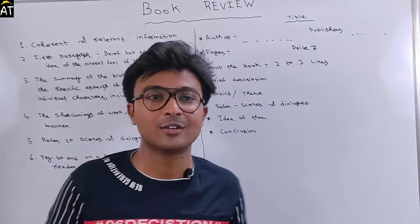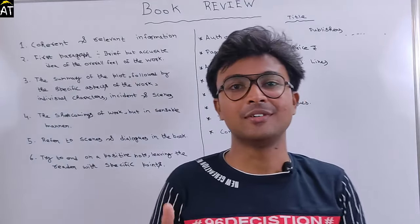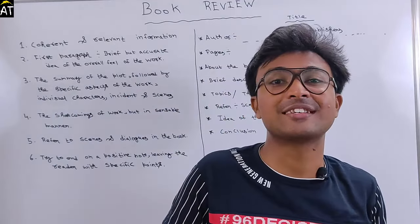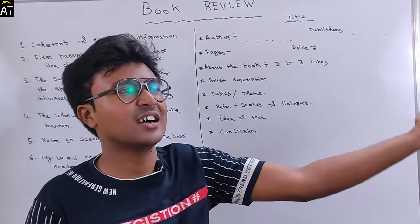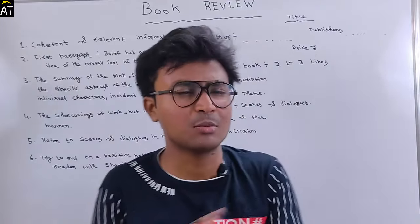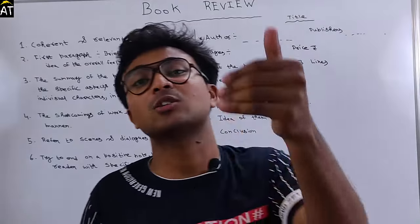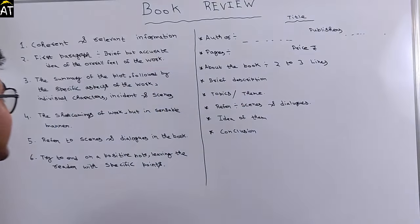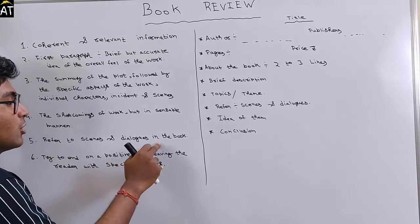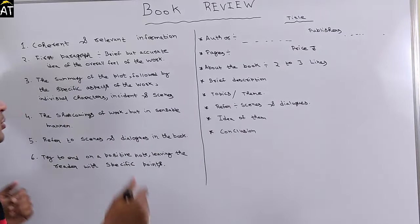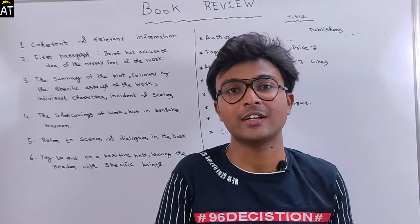For example, if you are reviewing Chetan Bhagat's book 'Three Mistakes of My Life,' what was its outcome? Or 'Half Girlfriend' — what was its outcome? These are examples you can use as reference. You also need to refer to the scenes and dialogues of the book — which scenes and which dialogues you are going to highlight.